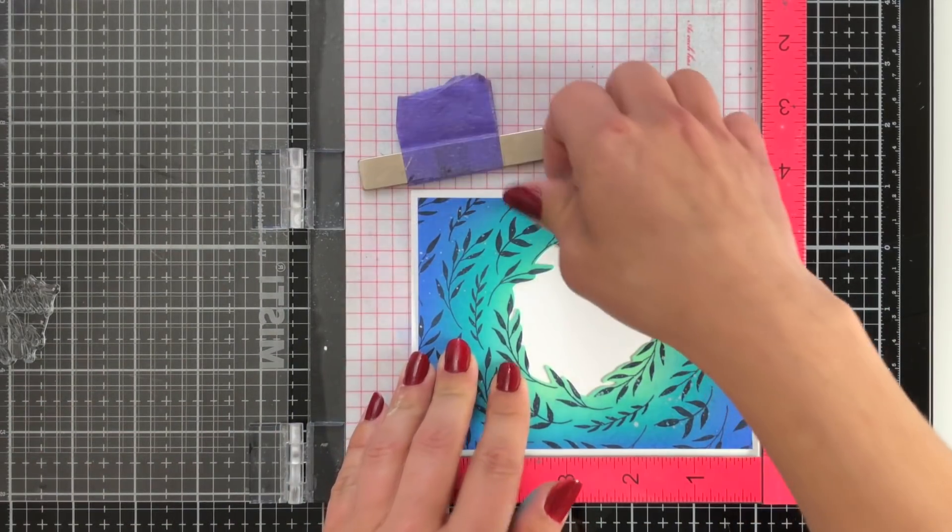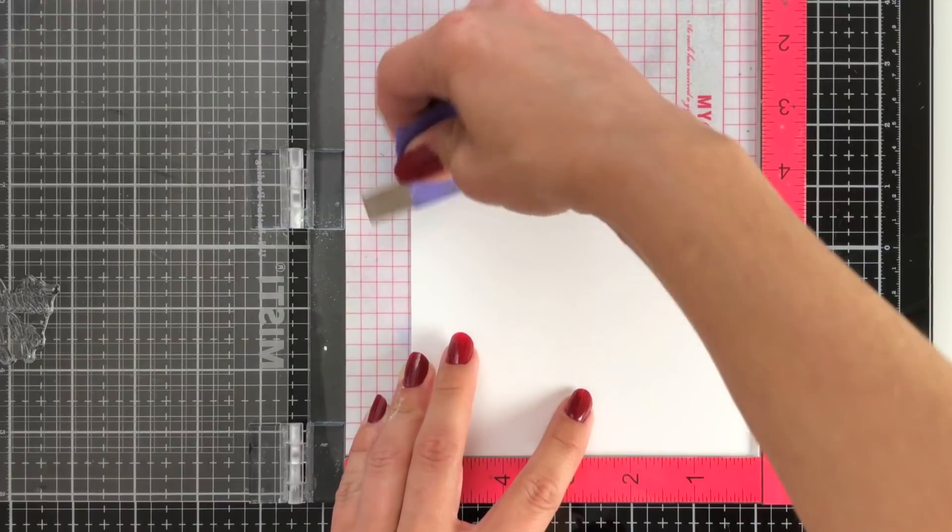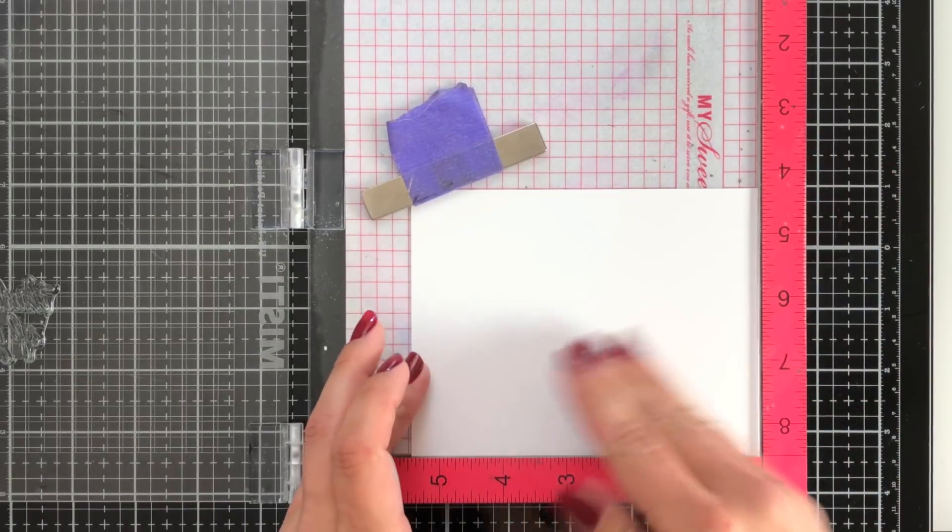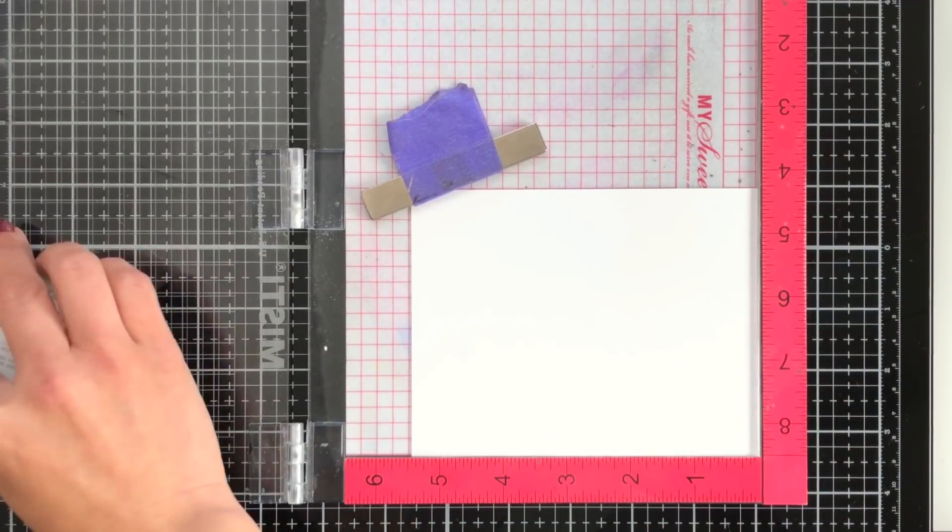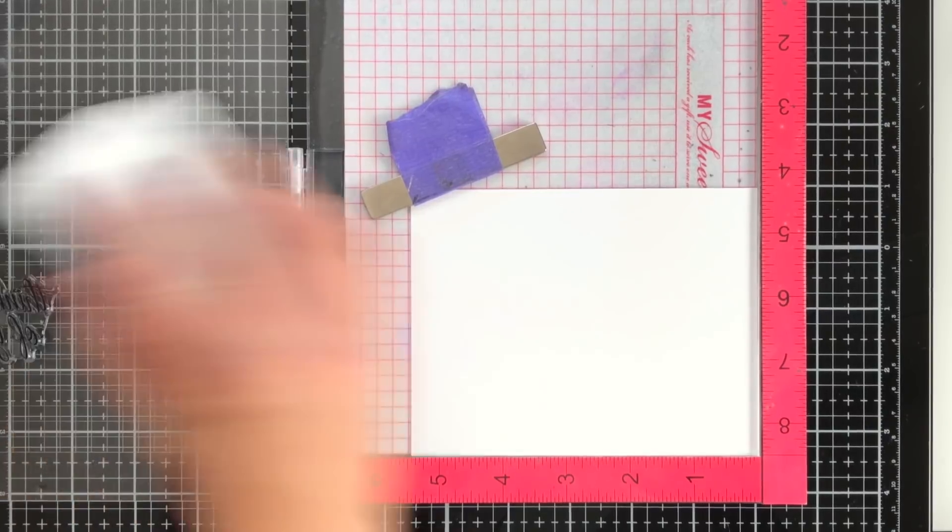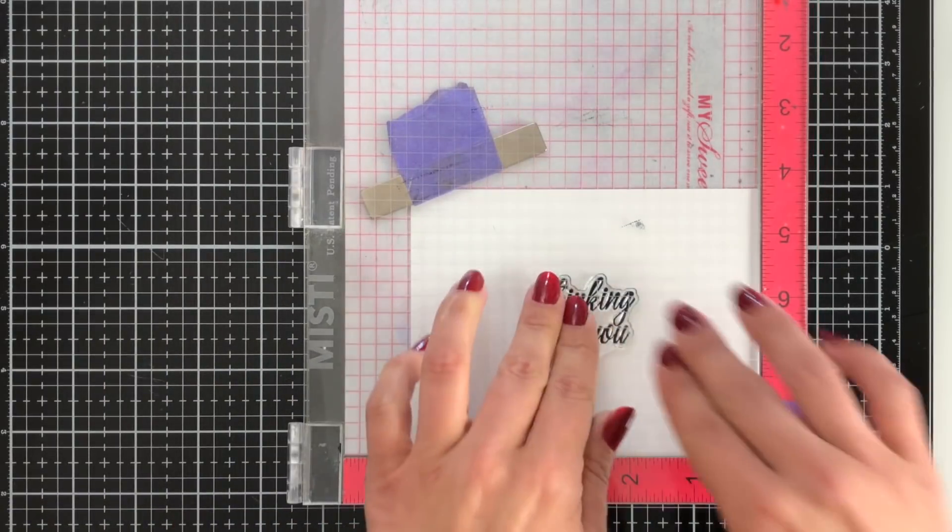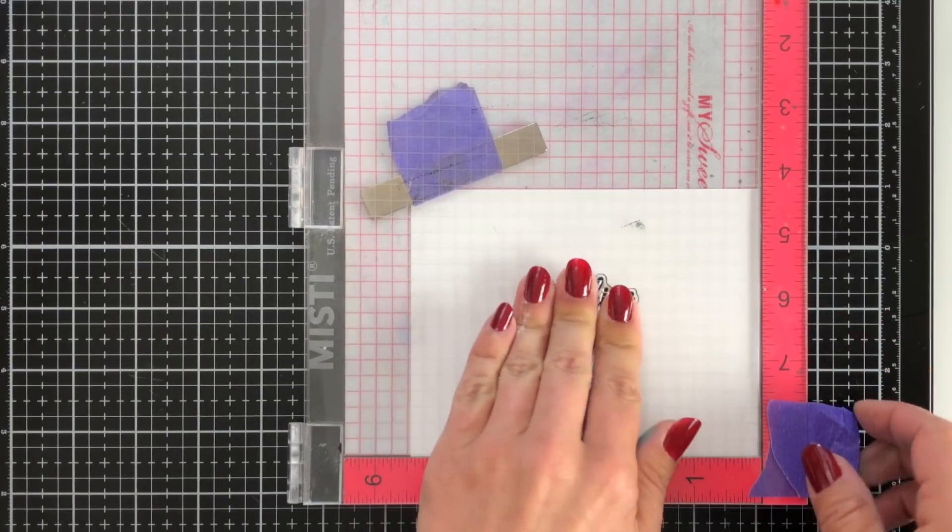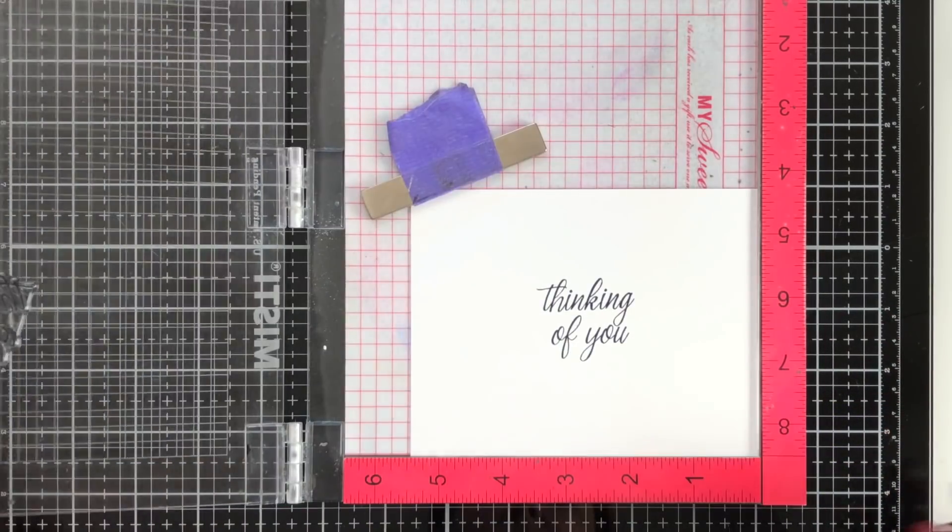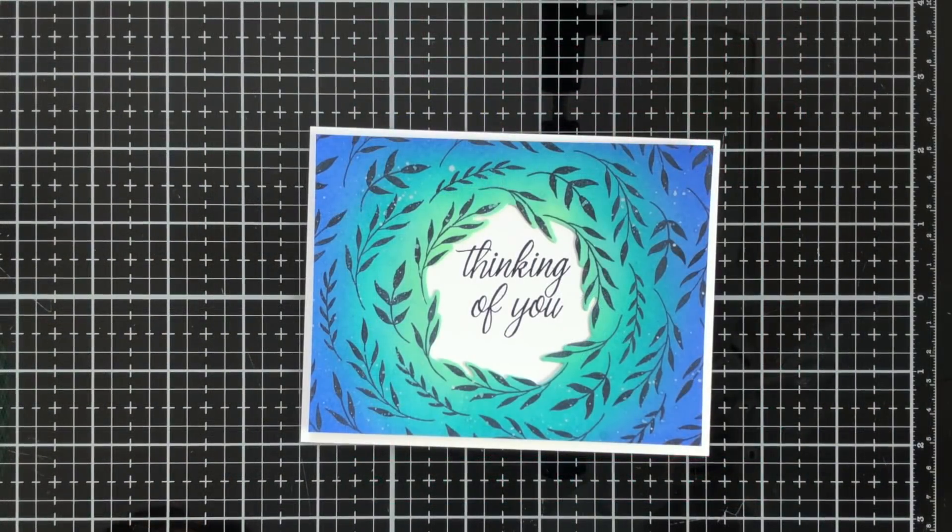And then before I stamp, I want to remove that just in case because accidents do happen. So that way I just have my white cardstock here. And I'm still going to use the VersaFine ink that just happened to be on my desk. And it is a really good black ink. And we have this beautiful scripty font, Thinking of You.